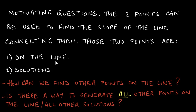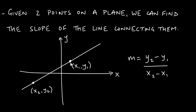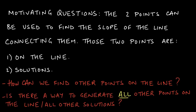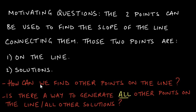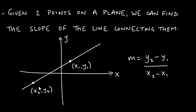Those two points are on the line itself — if you're making a line passing through two points, the points have to be on the line. More importantly, they are solutions to that line, meaning if you plug x1 and y1 into the equation you get a true statement, and likewise for x2 and y2. So the question becomes: how do we find the coordinates of other points on this line?